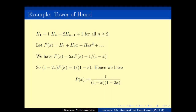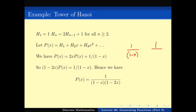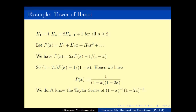In the last example we had 1/(1-3x) and could apply the Taylor series immediately. Now we have P(x) = 1 / ((1-x)(1-2x)). We want the coefficient of x^n in this function. We could write the Taylor series of 1/(1-x) or 1/(1-2x) individually, but writing the Taylor series of their product is not straightforward — there is no direct way. So we do a small trick.